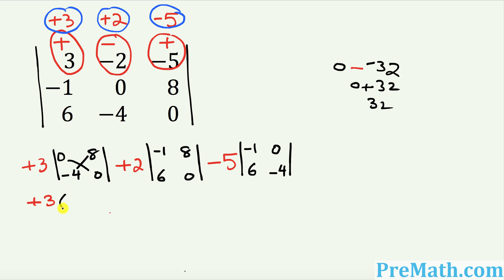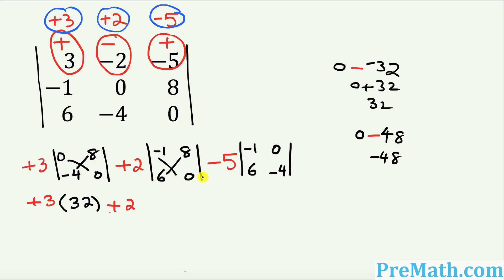The next term is positive 2 times the value of its determinant. Cross-multiply: negative 1 times 0 is 0, then put a minus sign, then 6 times 8 is 48. So 0 minus 48 equals negative 48. Write positive 2 times negative 48.